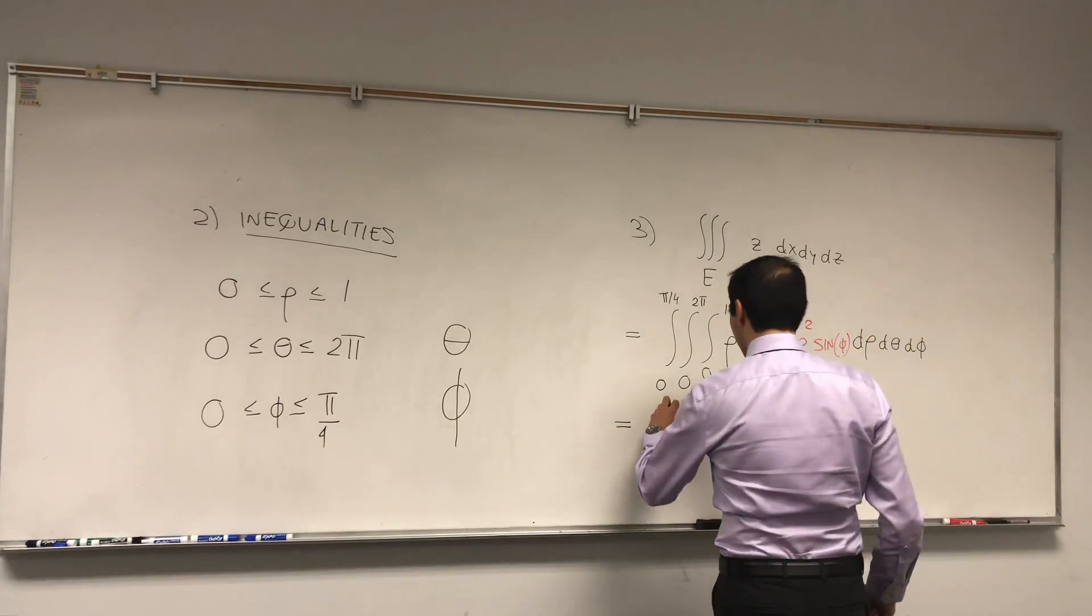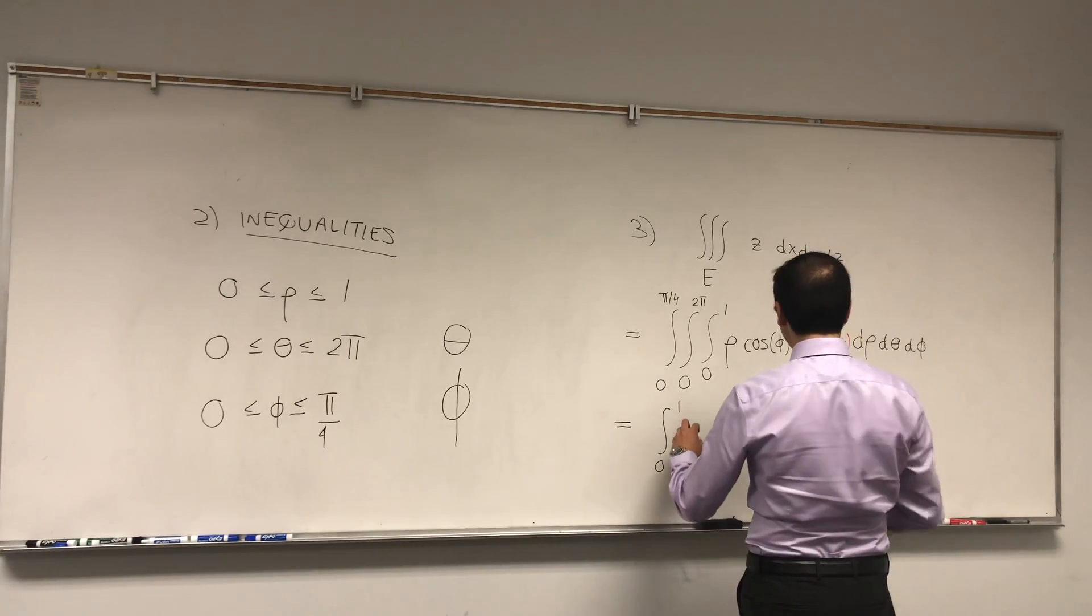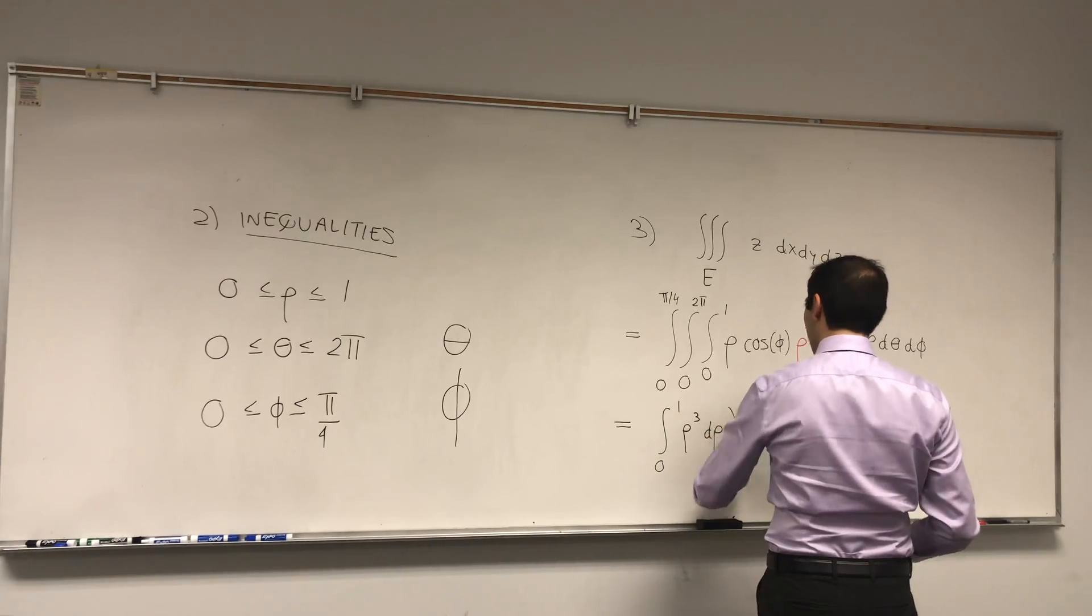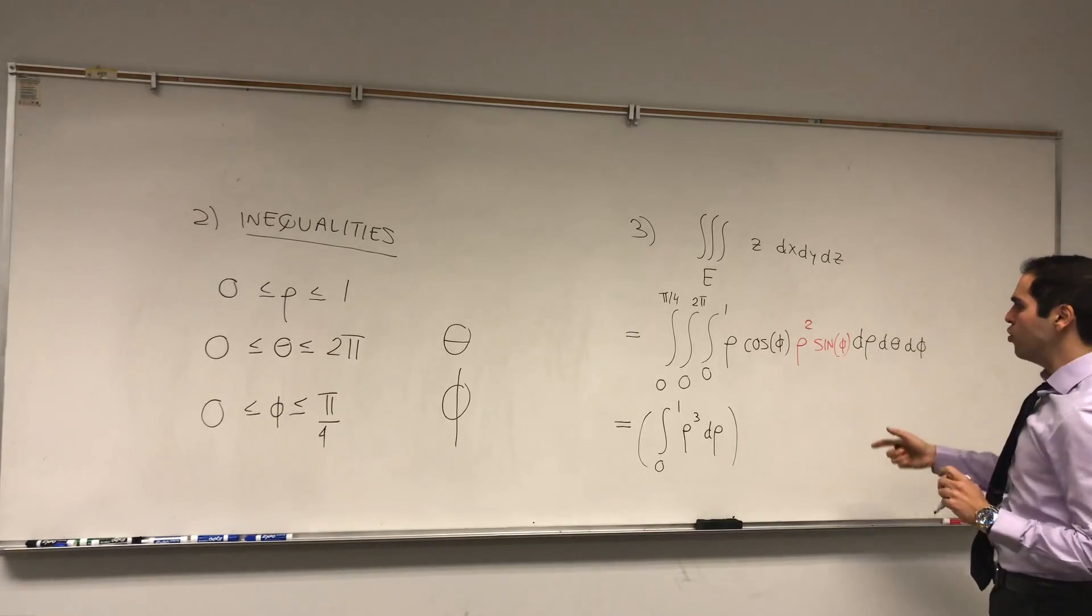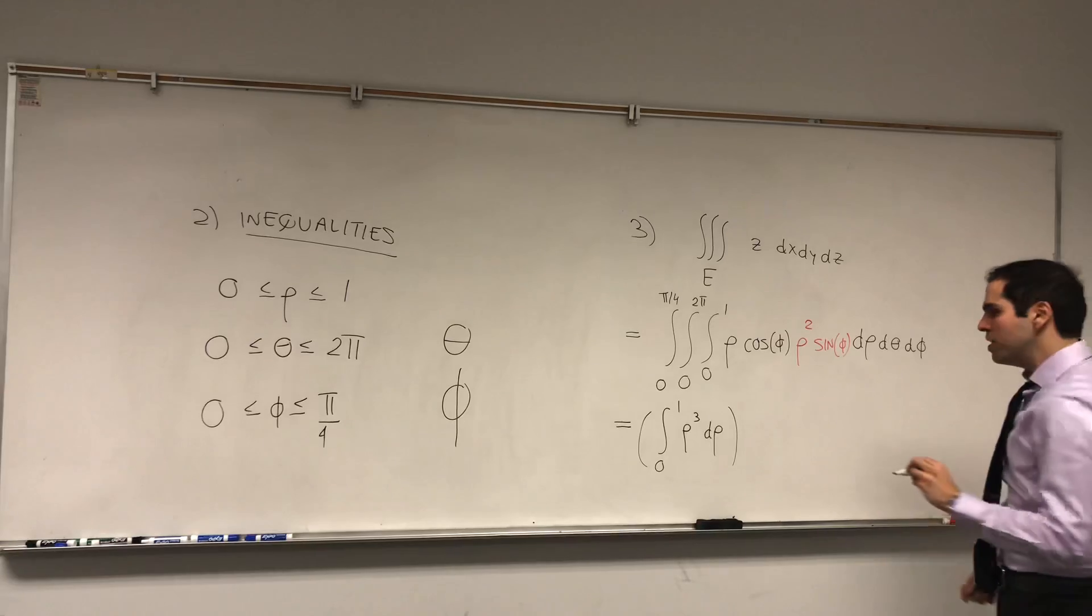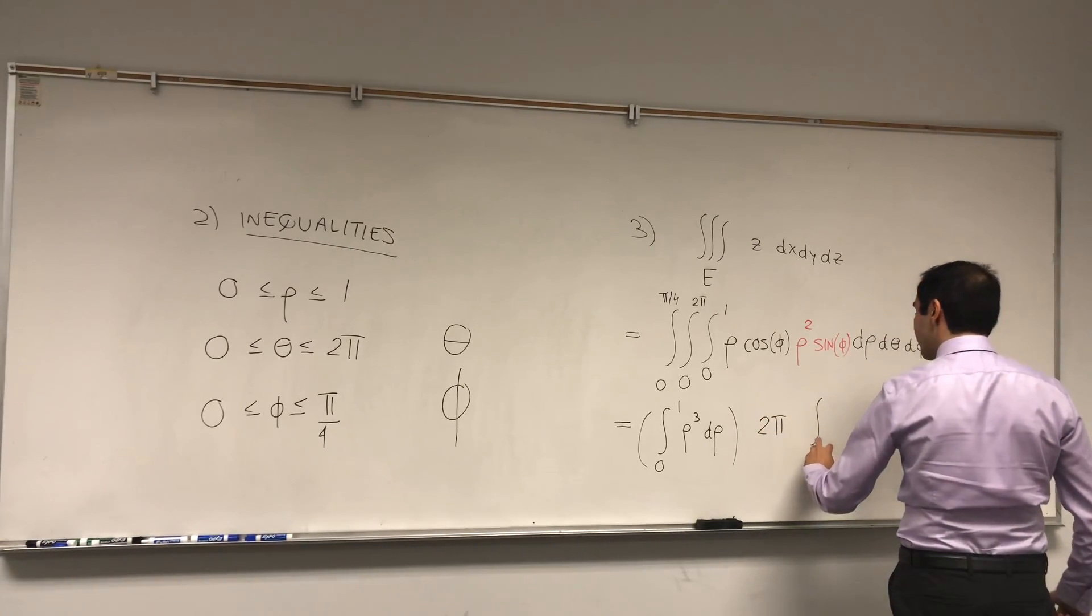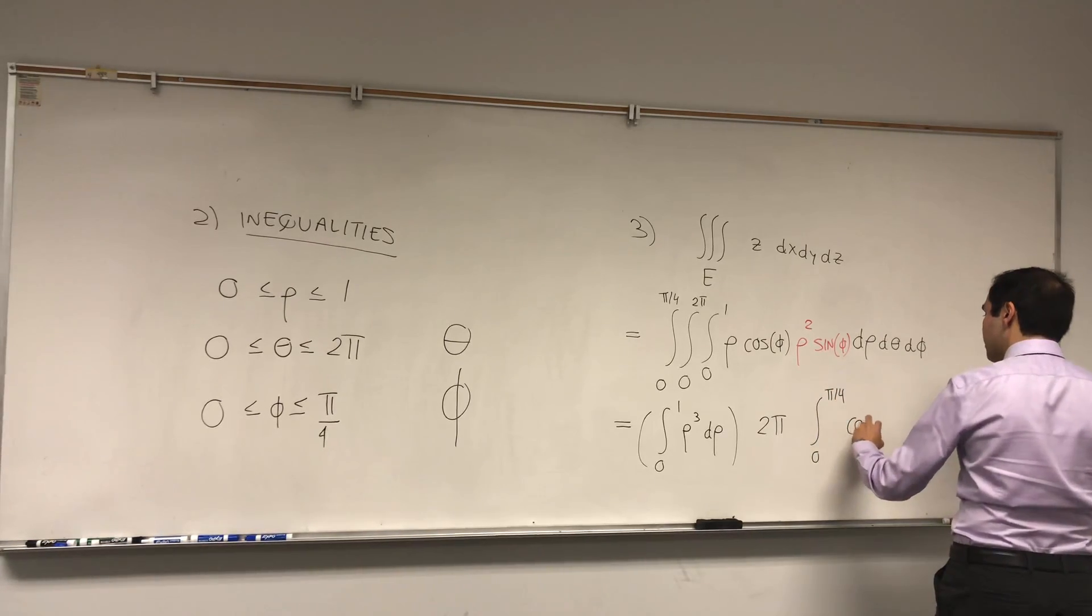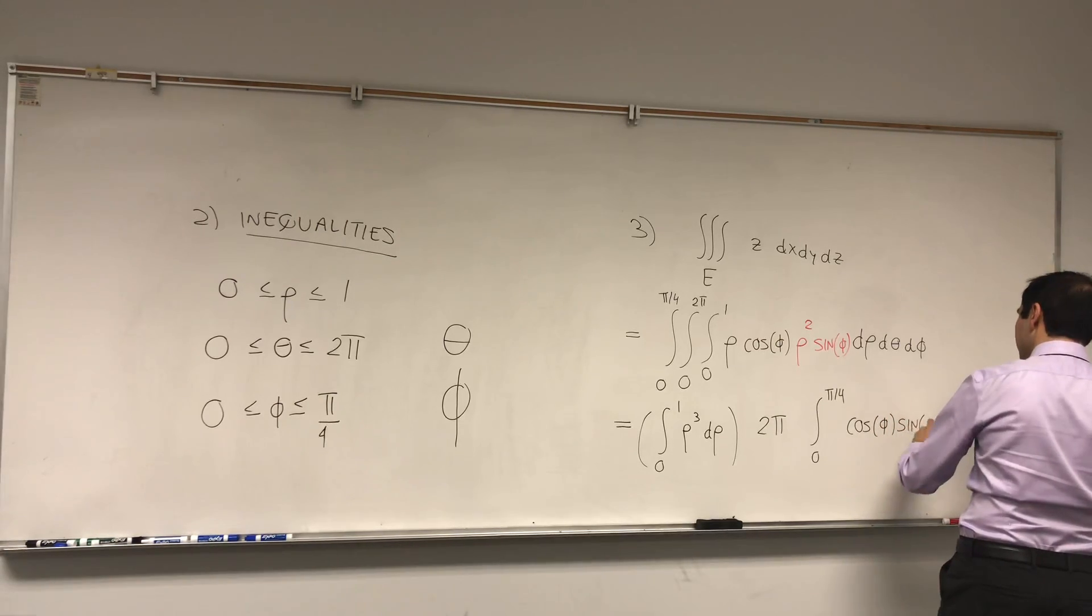So, what this becomes, it's the integral from 0 to 1 of rho times rho squared. So, rho cubed, d rho, times. Well, the integral from 0 to 2 pi, of d theta, which just becomes 2 pi. And lastly, the integral from 0 to pi over 4, of cosine phi, sine of phi, d phi.